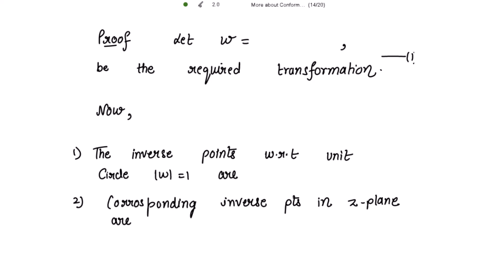So the proof: let w equal to (az + b) / (cz + d), with the condition that ad minus bc should be non-zero. Let this be the required transformation, and please note that here c is non-zero, otherwise the points at infinity would correspond.